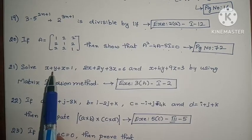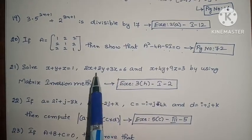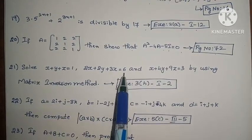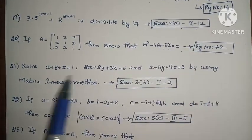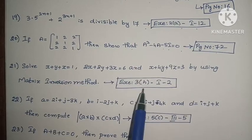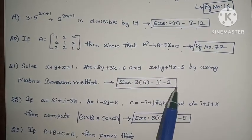Next, students, solve x plus y plus z equals 1, 2x plus 2y plus 3z equals 6, and x plus 4y plus 9z equals 3 by using matrix inversion method. Exercise 3, First Roman, Second one.